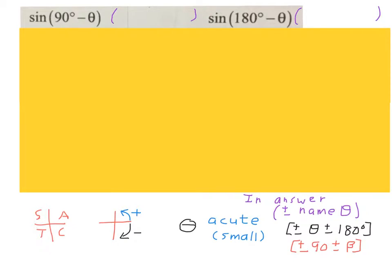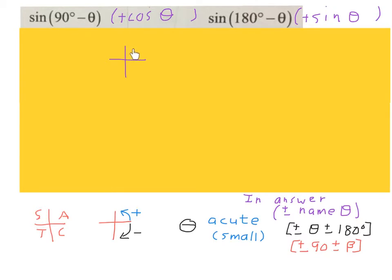First two examples: sine(90 minus theta) and sine(180 minus theta). With 180, the name won't change, so we keep sine. With 90, the name changes to cosine. For sine(90 minus theta): change the name to cos theta, then check the quadrant — start at north, go to 90, backwards for an acute angle, we are in the first quadrant where all is positive. Since the original ratio was sine and sine is positive here, we put a plus. That gives positive cos(theta).